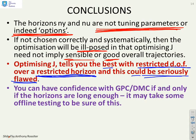So you can have confidence with GPC or DMC type of algorithms if and only if, that's the key point, if and only if the horizons are long enough. And it may take some offline testing to actually establish what is long enough. And you've seen here that in some examples long enough might mean that nu has to be 20 or so and ny has to be 30 or 40.